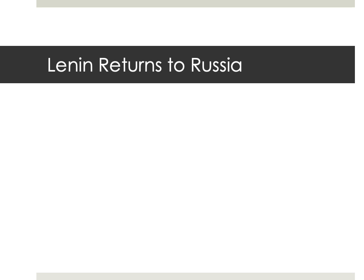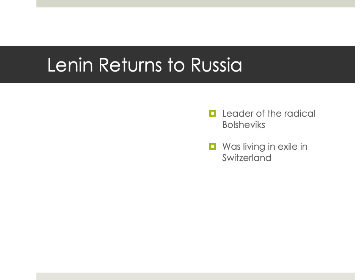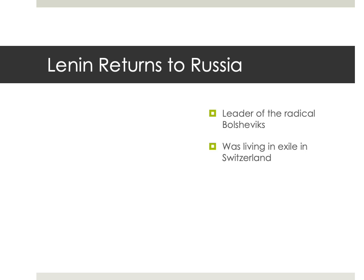Bolshevik control over the Soviets really started to occur with the return of their leader, Vladimir Lenin. He had been living in exile in Switzerland, apparently in a small second-floor apartment next to a sausage factory. When the Russian monarchy fell and the provisional government took over, the Germans saw an opportunity to potentially end Russian involvement in the war. They went and got Lenin from Switzerland and smuggled him back to Petrograd — St. Petersburg — in a sealed train car. They kept him sealed in the car so he wouldn't spread his radical Marxist ideas in German-held territory.